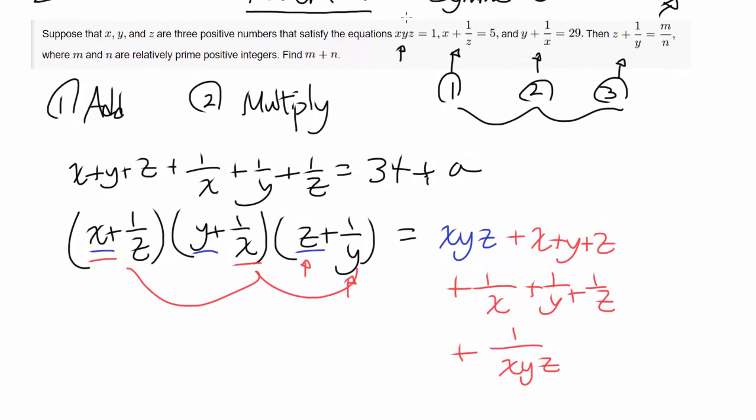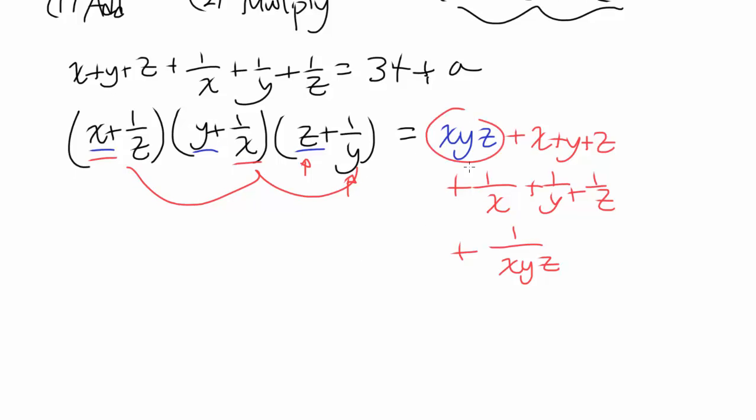And can we simplify this somehow? Hey, we know xyz is 1. That was given to us at the start of the question. So you can simplify xyz and 1 over xyz. And that's 1 plus 1, which is 2. So you have 2 plus x plus y plus z plus 1 over x plus 1 over y plus 1 over z. And what do you know this thing is equal to?